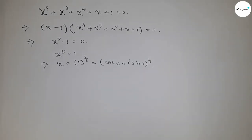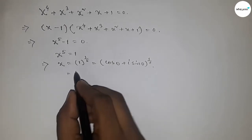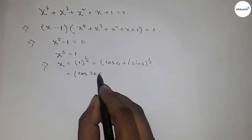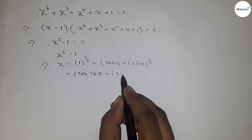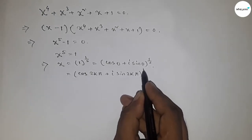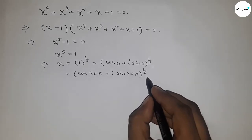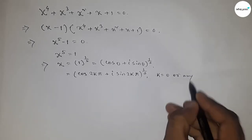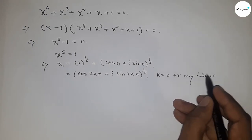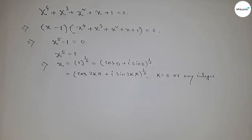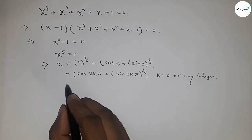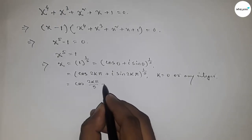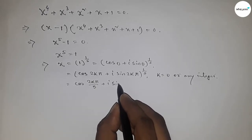Now this can be written as (cos 2kπ + i sin 2kπ)^(1/5), where k equals 0 or any integer. Next we can write this as cos(2kπ/5) + i sin(2kπ/5), where k = 0, 1, 2, 3, and 4.